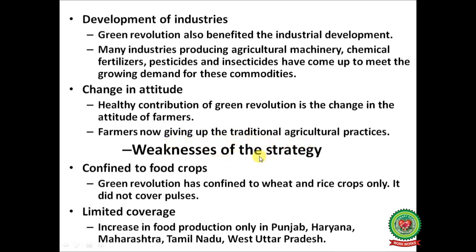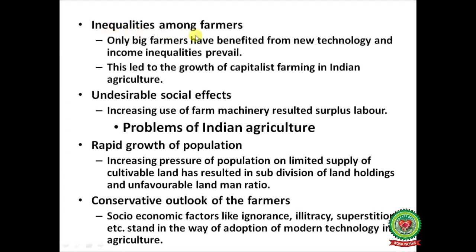Weaknesses of the strategy: first is that Green Revolution has been confined to wheat and rice crops only and did not cover pulses. Its coverage was limited — increase in food production occurred only in Punjab, Haryana, Maharashtra, Tamil Nadu, and Western Uttar Pradesh. Inequalities among farmers: only big farmers benefited from the new technology, income inequalities prevailed, and this led to the growth of capitalist farming in Indian agriculture.